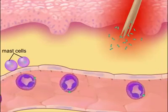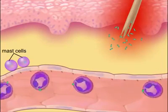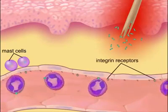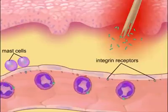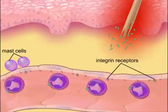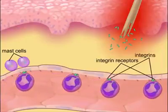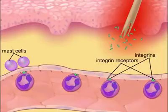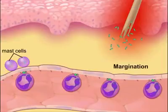These integrins then tightly attach to adhesion receptor molecules on the endothelial cells, causing the neutrophils to stick to the endothelium and stop rolling. This accumulation of neutrophils along the walls of the capillary is referred to as margination.